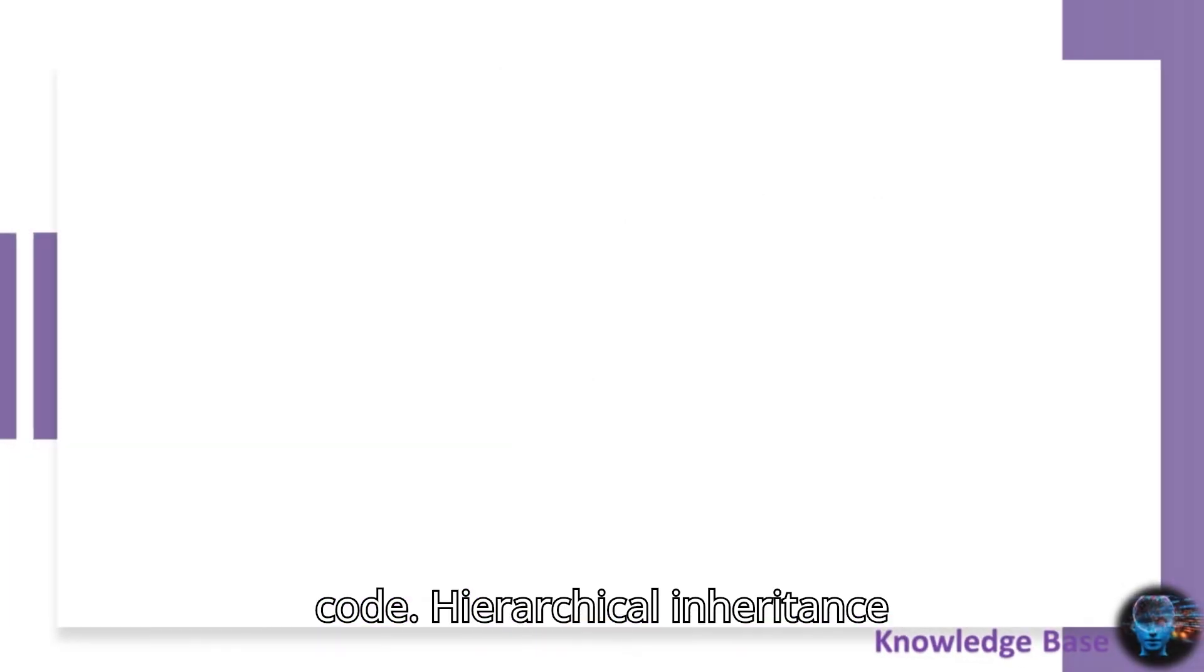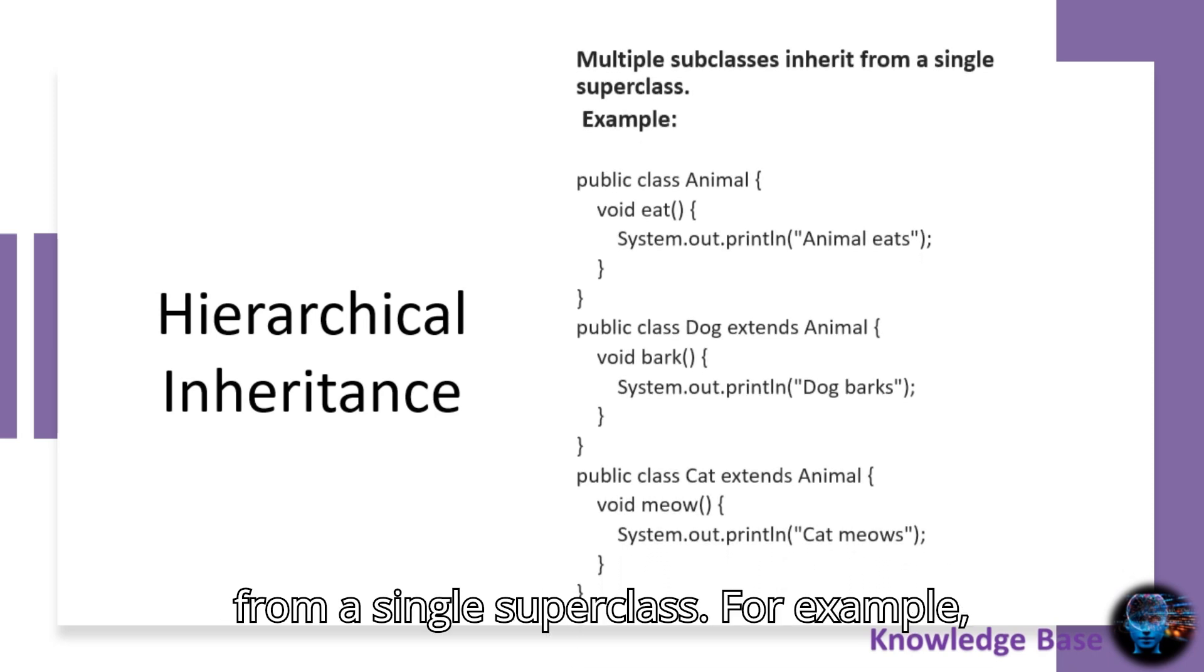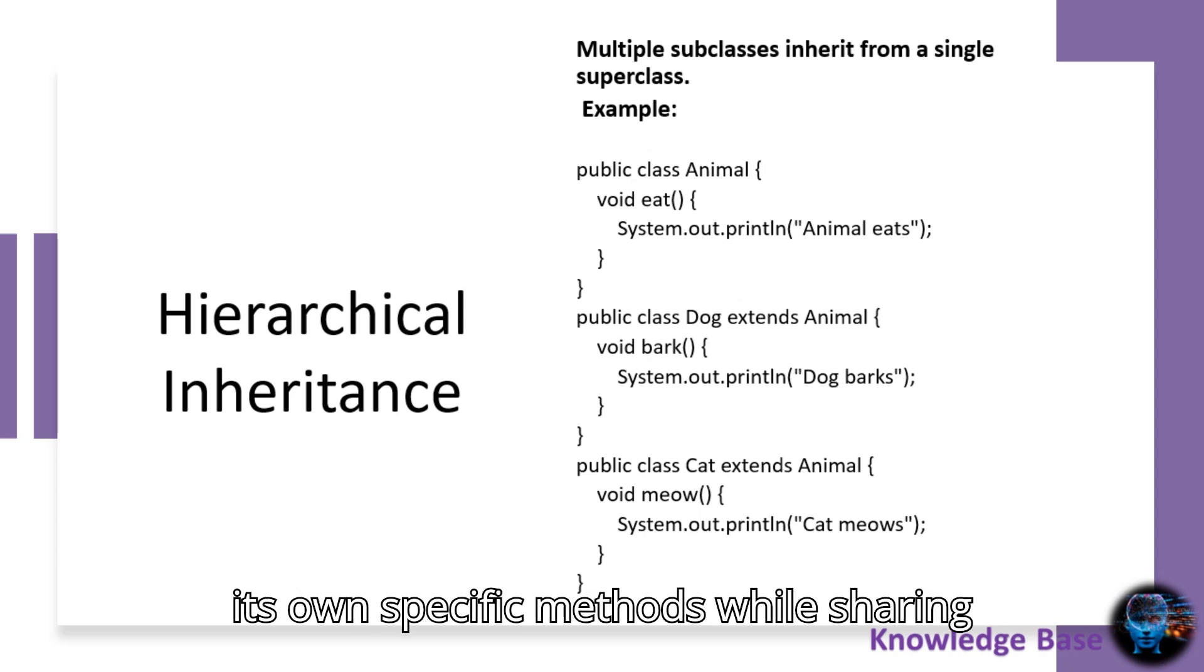Hierarchical inheritance occurs when multiple subclasses inherit from a single superclass. For example, both dog and cat classes can inherit from the animal class. Each subclass can have its own specific methods while sharing common behaviors from the animal class.